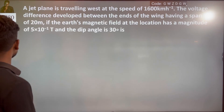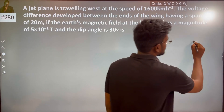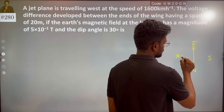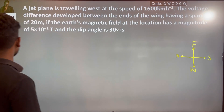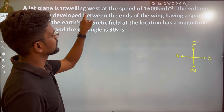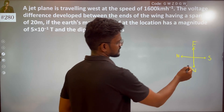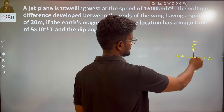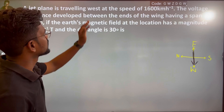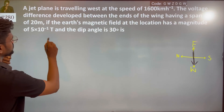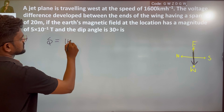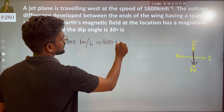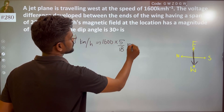We know the directions: East, West, South, and North. The plane is travelling west at 1600 km per hour, and we have to convert that — multiplying by 5 by 18 — to get the speed in meters per second.